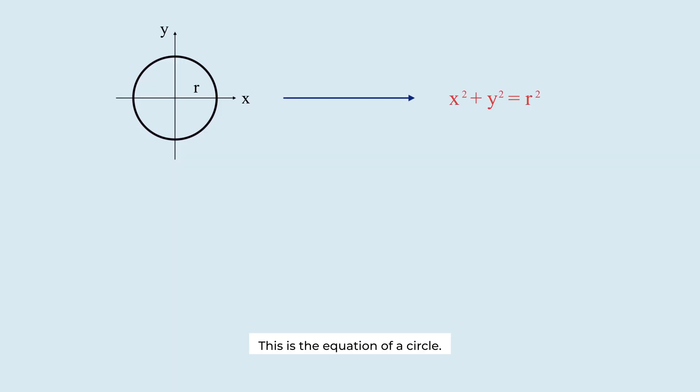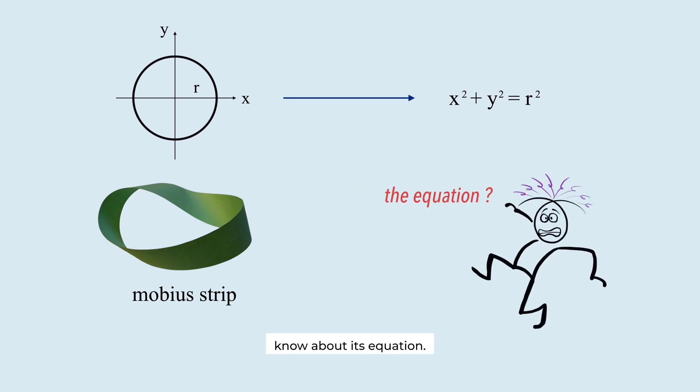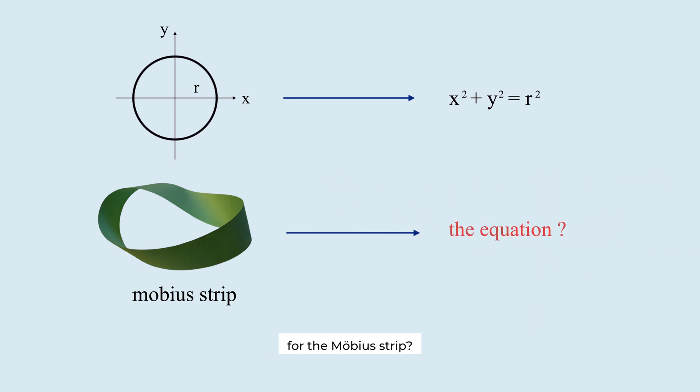This is the equation of a circle and everybody knows this is the Möbius strip, but few people know about its equation. What is the equation for the Möbius strip?